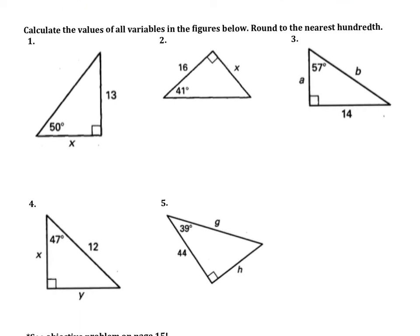At the bottom, we have five different examples. If we read the directions, I want us to round to the nearest hundredth. So that's two decimal places. Looking at example one, we're going to start out by labeling our sides according to the angle that we have. So this side is O, this is our hypotenuse, this is our adjacent side.